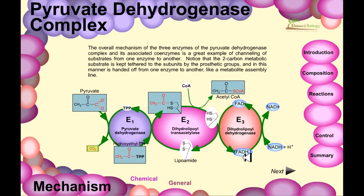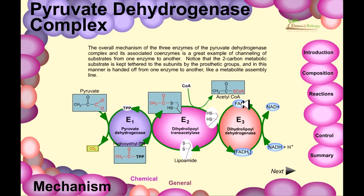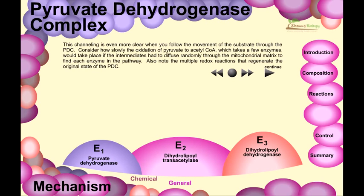FADH2 is reduced and we need to restore it to its oxidized form FAD. To oxidize FADH2 back to FAD, we must reduce NAD+ to NADH. Note that the animation is showing this in the wrong direction — the arrow should actually be in the opposite direction. Regardless, this channeling becomes even more clear when you follow the movement of the substrate through the PDC.